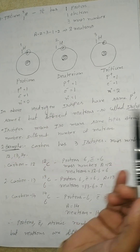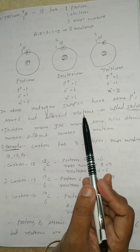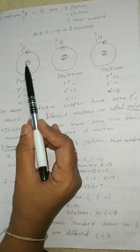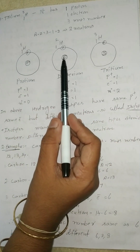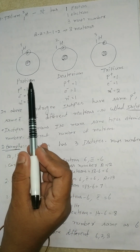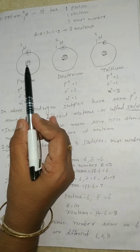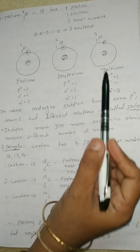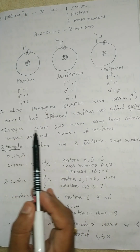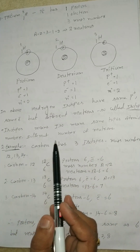In the above hydrogen isotopes, they have same protons and same electrons but different neutrons, so they are called isotopes. All three have 1 proton, 1 proton, 1 proton; and 1 electron, 1 electron, 1 electron. The difference is in the neutrons: protium has no neutrons, deuterium has 1 neutron, tritium has 2 neutrons. Isotopes means — 'iso' means same, 'topos' means atom — same atomic number but different number of neutrons.